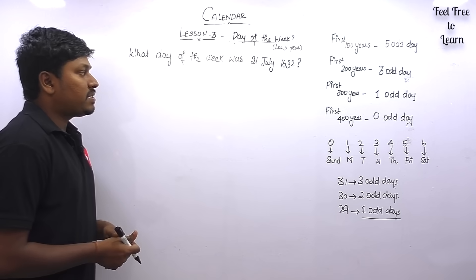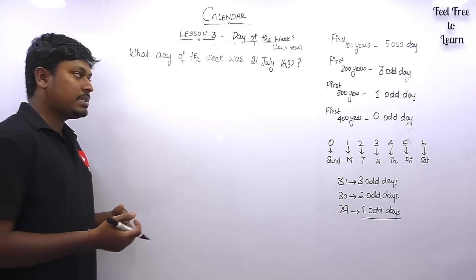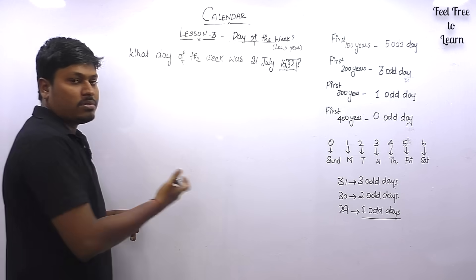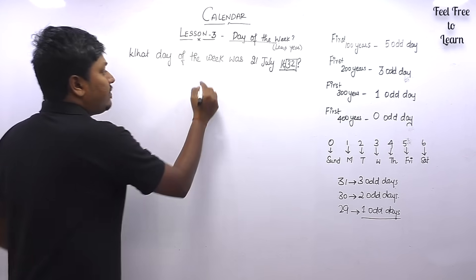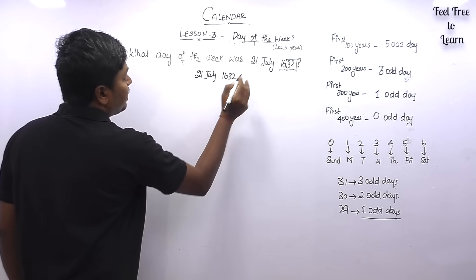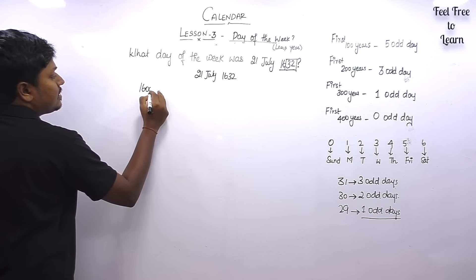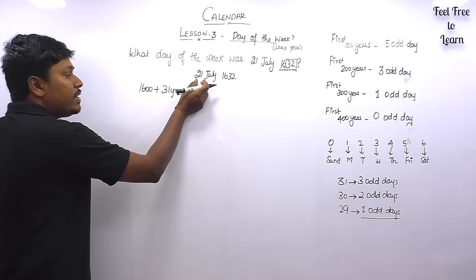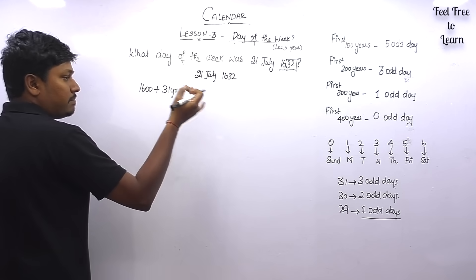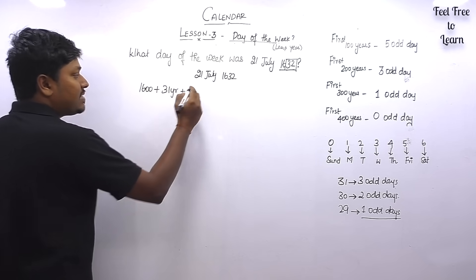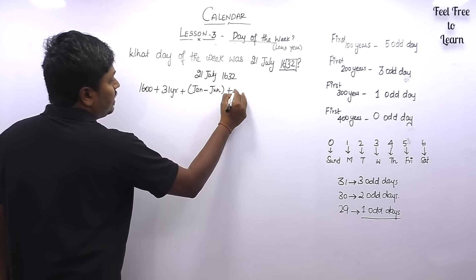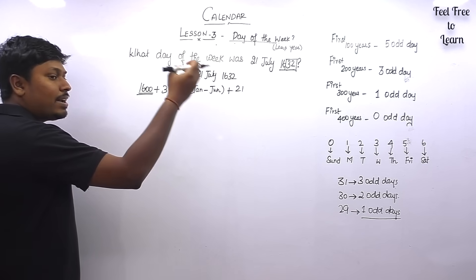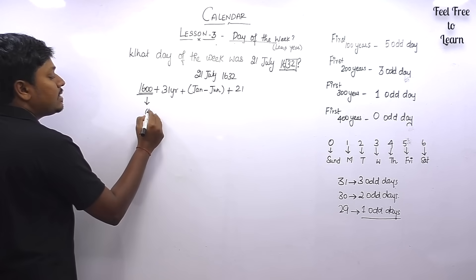Question 3: What day of the week was 21st July 1632? First, check whether 1632 is a leap year. The last 2 digits are 32, which is divisible by 4, so 1632 is a leap year. We write 1632 as 1600 plus the remaining 32 years: 31 years first, then the 32nd year to find 21st July. Before July we have January, February, March, April, May, and June — 6 months total. For 1600 years: 0 odd days.